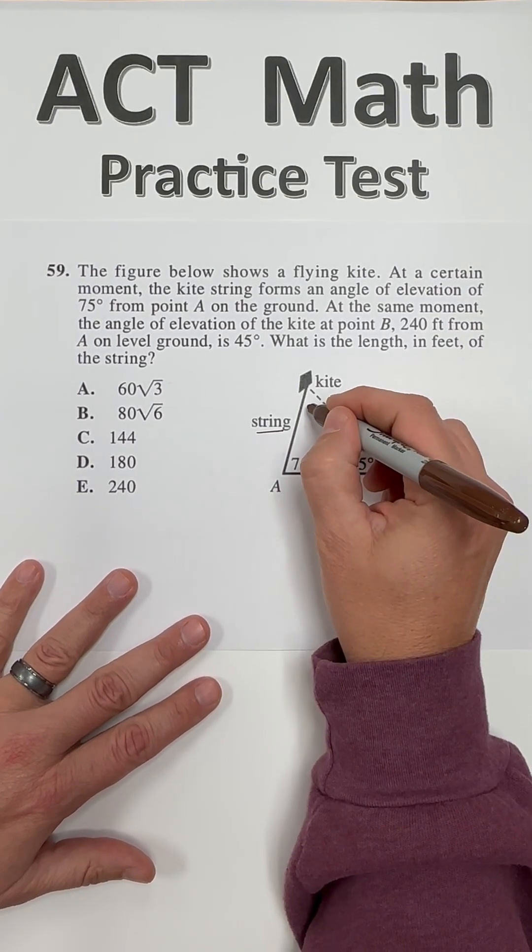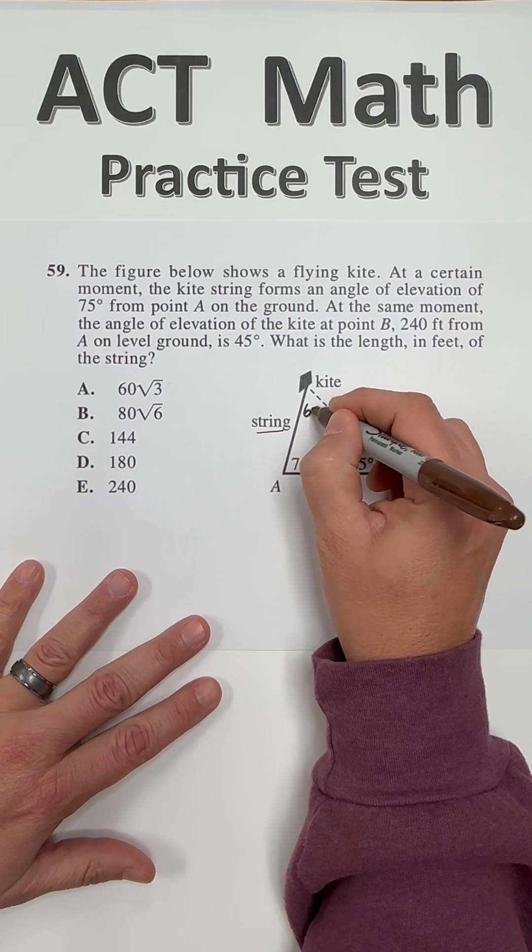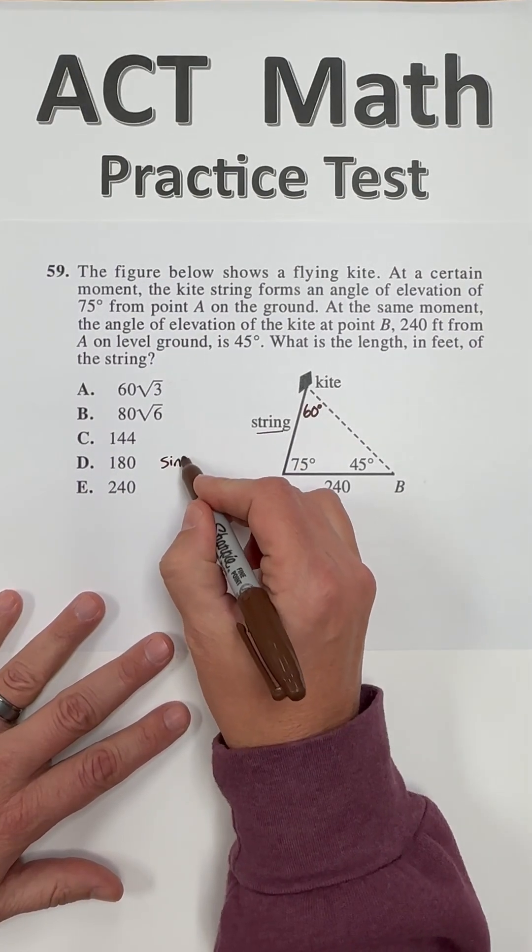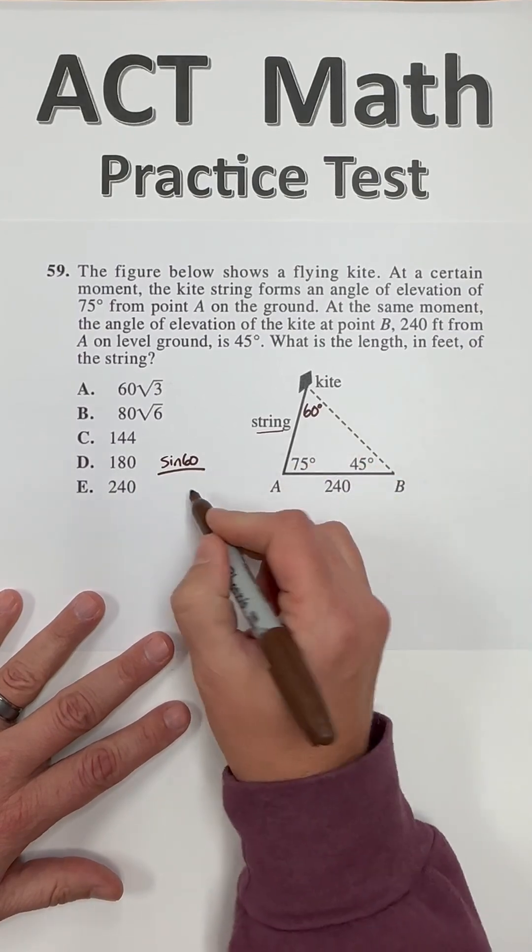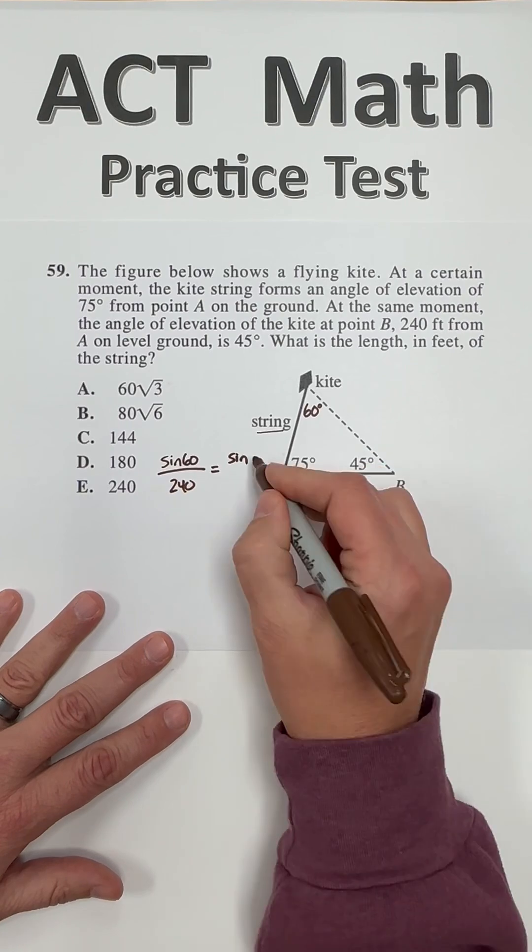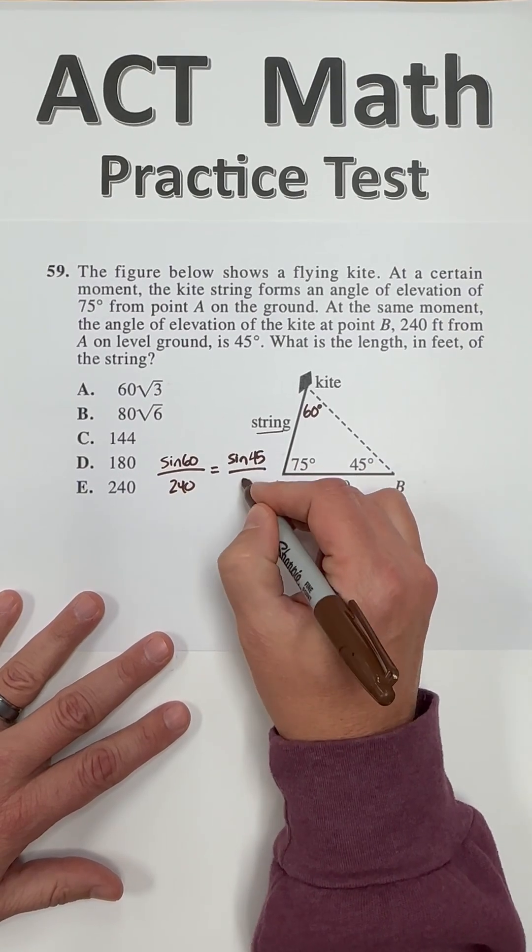I am going to figure out this missing angle here, which is 60 degrees, and I'm going to do a law of sines. So the sine of 60 degrees divided by 240 equals the sine of 45 degrees divided by x.